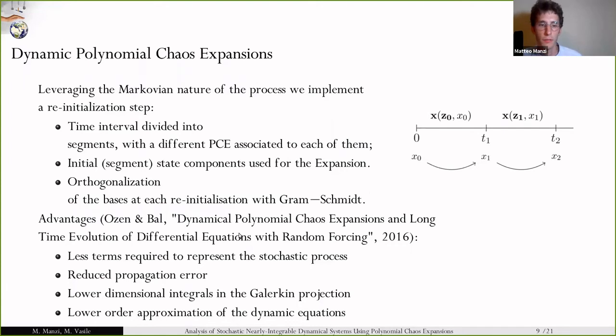We do this because of a number of reasons. First, we need less terms to represent the stochastic process. As previously stated, the error is proportional to the time interval. Also, we can mitigate the curse of dimensionality associated to the Galerkin projection for the computation of the variation of the coefficients of the expansion. And at the same time, we're able to reduce the propagation error and lower the order of the polynomial necessary to approximate the dynamics.